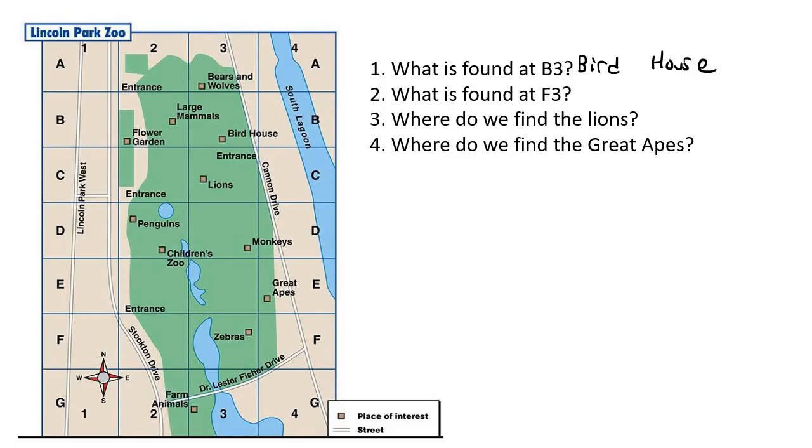Number two, what is found at F3? So we go across at the F, and we go down at the 3. And so it's this block where they intersect, and that is the zebras, or zebras, as some people would say.